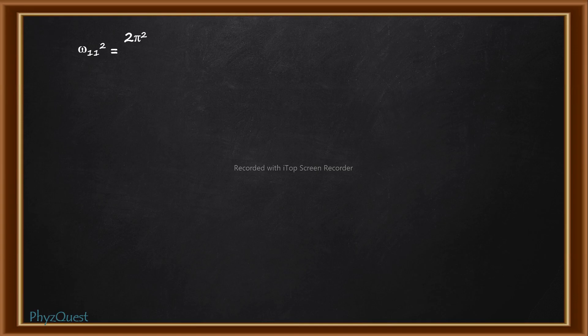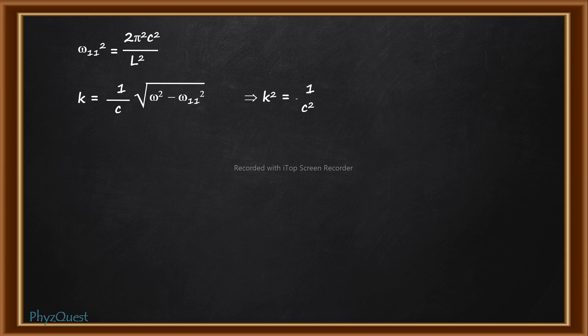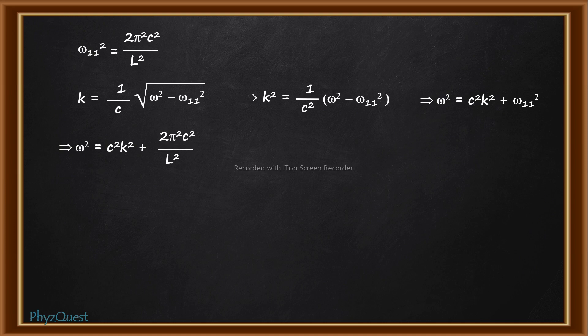Therefore ω_11² = 2π²c²/l². We now find ω in terms of k. From k = (1/c)√(ω² − ω_11²), squaring gives k² = (1/c²)(ω² − ω_11²), so ω² = c²k² + ω_11² = c²k² + 2π²c²/l². This is the expression for ω².